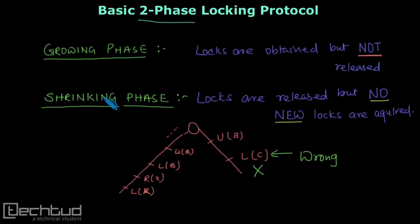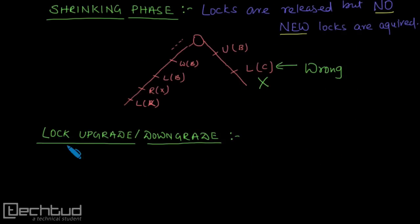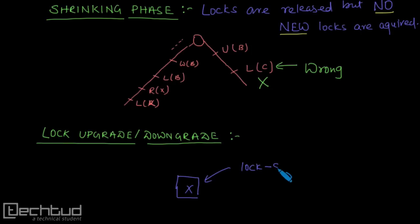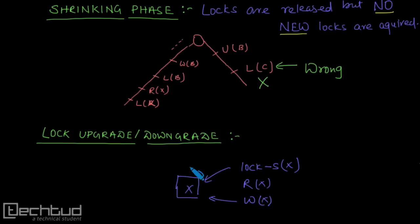Now let's talk about lock upgrade and downgrade. If I have data item X and I want to just read it, I need not acquire an exclusive lock. So what I do is acquire a shared lock on data item X, and then I can read it. But later on, if I want to perform a write operation on this data item, then before I perform the write I have to upgrade this lock — I have to do a lock-exclusive (X) on data item X. This is called upgradation of lock.